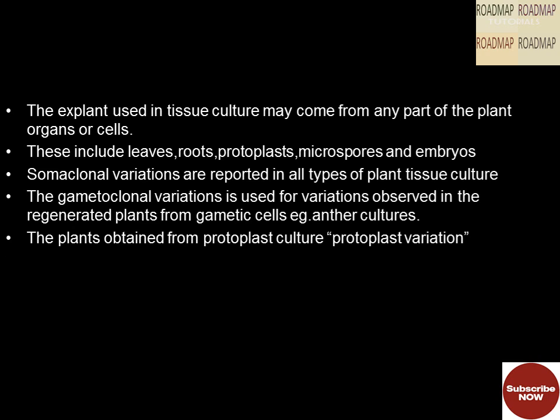The explants used in tissue culture — which may be a leaf, root, or stem — can come from any part of the plant. These include leaves, roots, protoplasts, microspores, and embryos. Somaclonal variations are reported in all types of plant tissue culture. The term gametoclonal variations is used for variations observed in regenerated plants from gametic cells, for example anther cultures. Plants obtained from protoplast culture are called protoclonal variations.